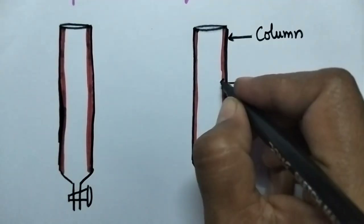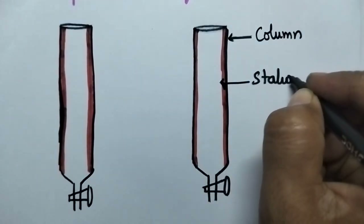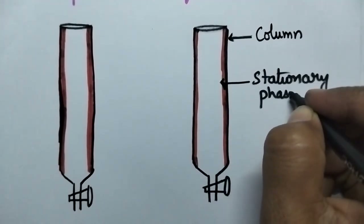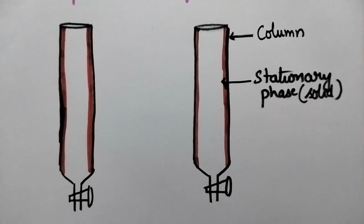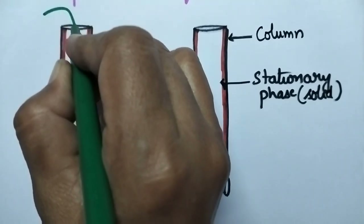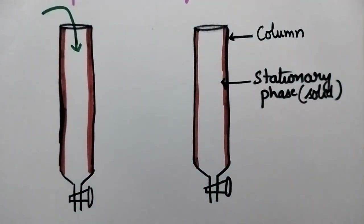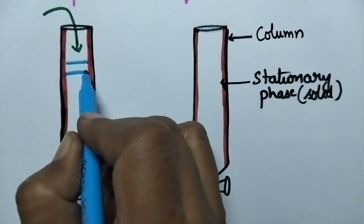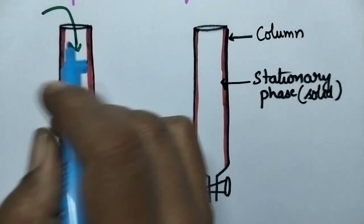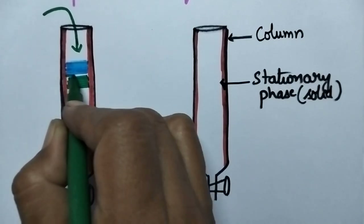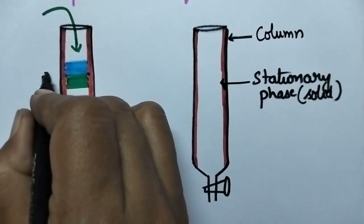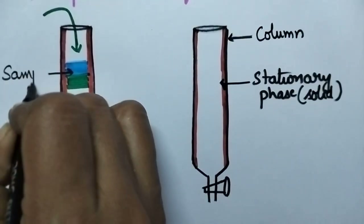It is a column used for the separation of the components of a sample, and it is the stationary phase which is present in a solid state. Initially, the liquid sample is passed through the column, and separation of the components takes place. Let us suppose that the sample contains two different components.